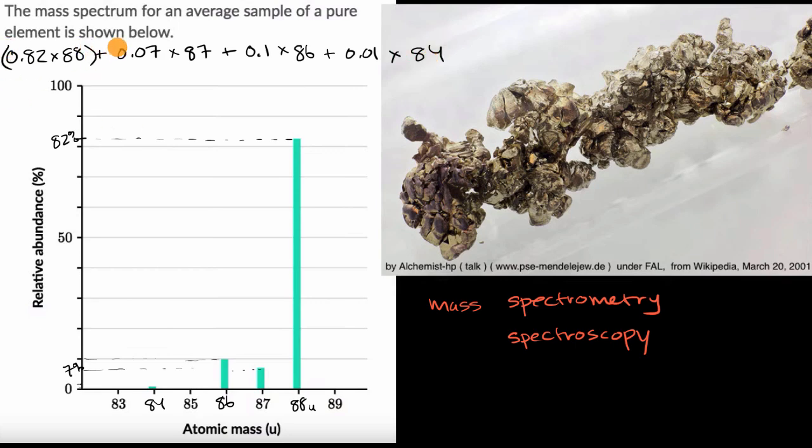And so if we were to do this calculation, this is our estimate of the average atomic mass of this element. We could type this into a calculator and get some number and then look that up on a periodic table of elements, or we could just try to estimate it.